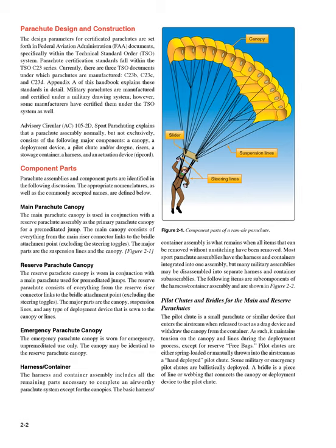Advisory Circular AC-105-2D, Sport Parachuting, explains that a parachute assembly normally, but not exclusively, consists of the following major components: a canopy, a deployment device, a pilot chute and inner drogue, risers, a stowage container, a harness, and an actuation device (ripcord). Component parts of parachute assemblies are identified in the following discussion. The appropriate nomenclatures, as well as the commonly accepted names, are defined below.